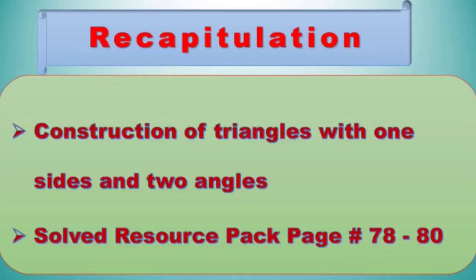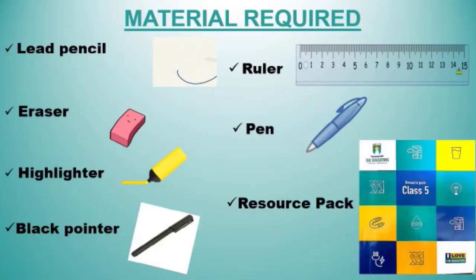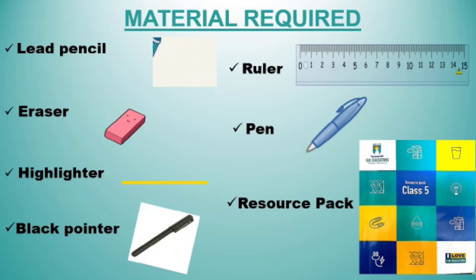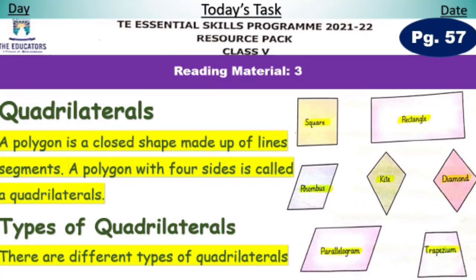Let's take a recap of our previous lesson in which we discussed the construction of triangles with one side and two angles, and solved resource pack page number 78 till 80. Material required for today's lesson is: lead pencil, eraser, highlighter, black pointer, notebook, ruler, pen, and your resource pack. So let's start our today's task.